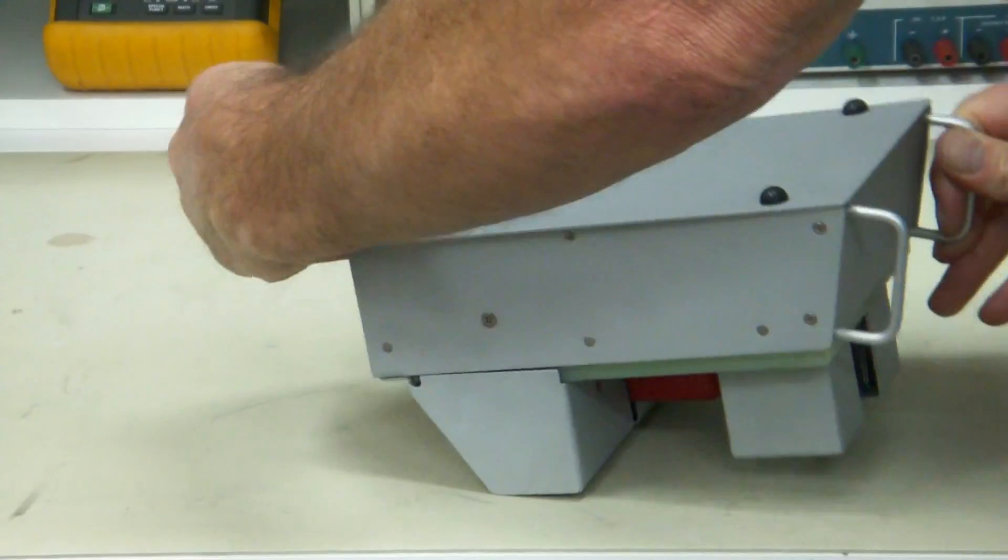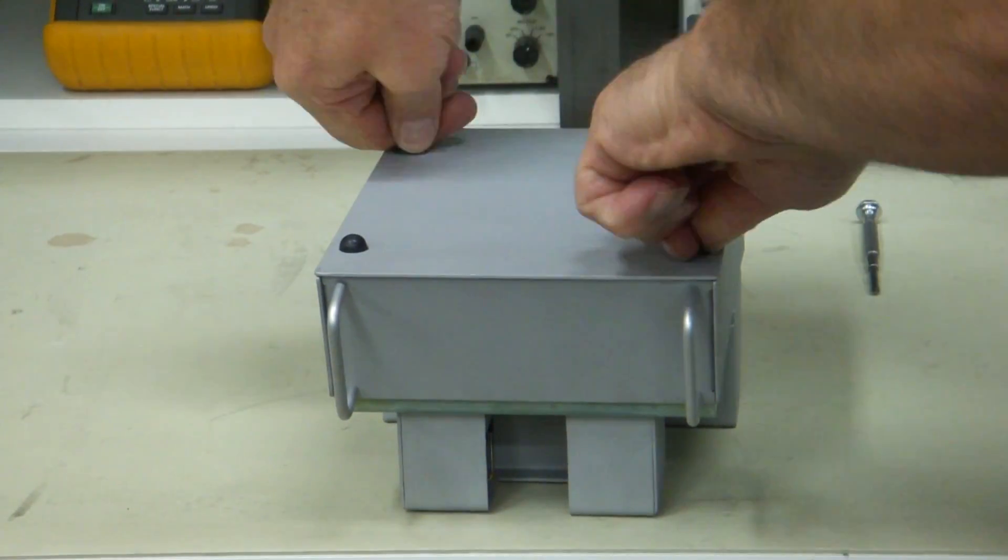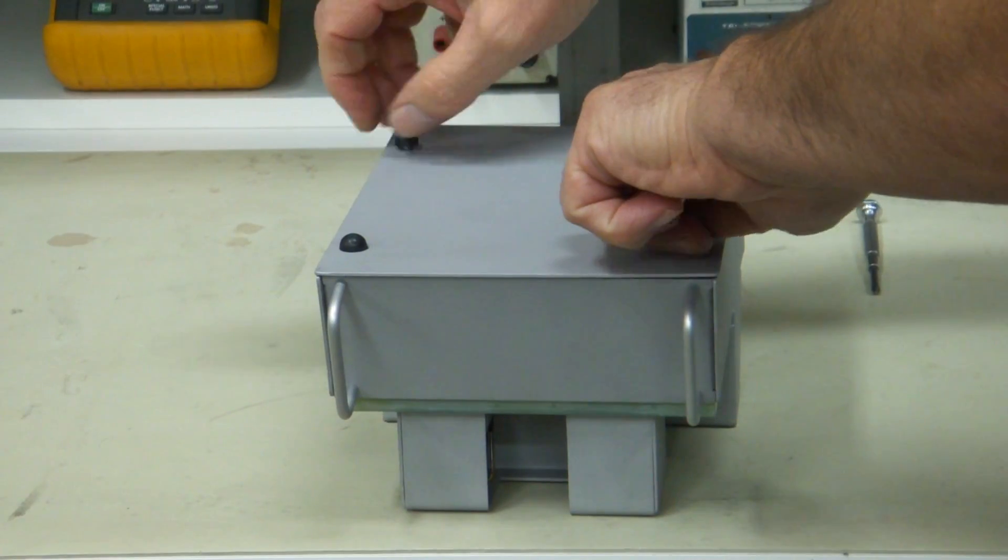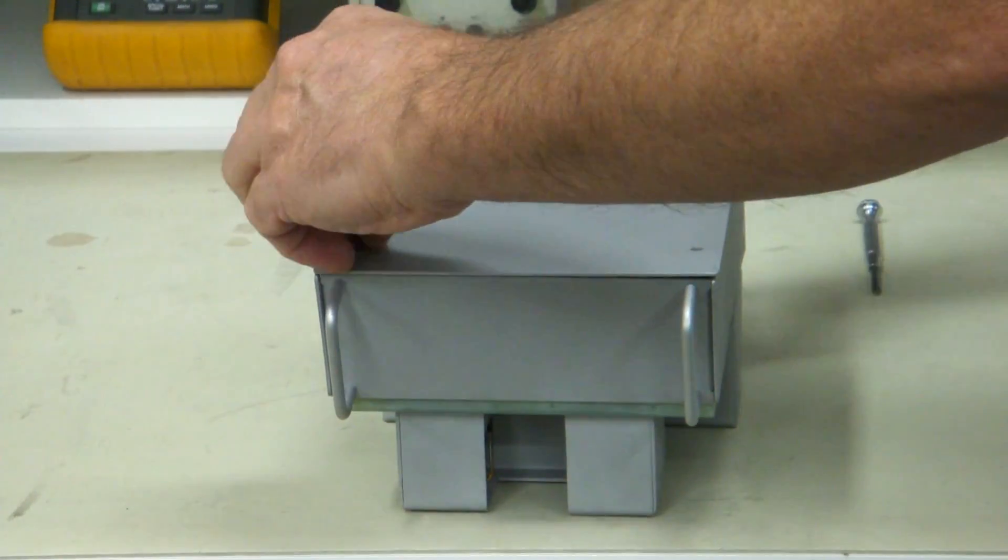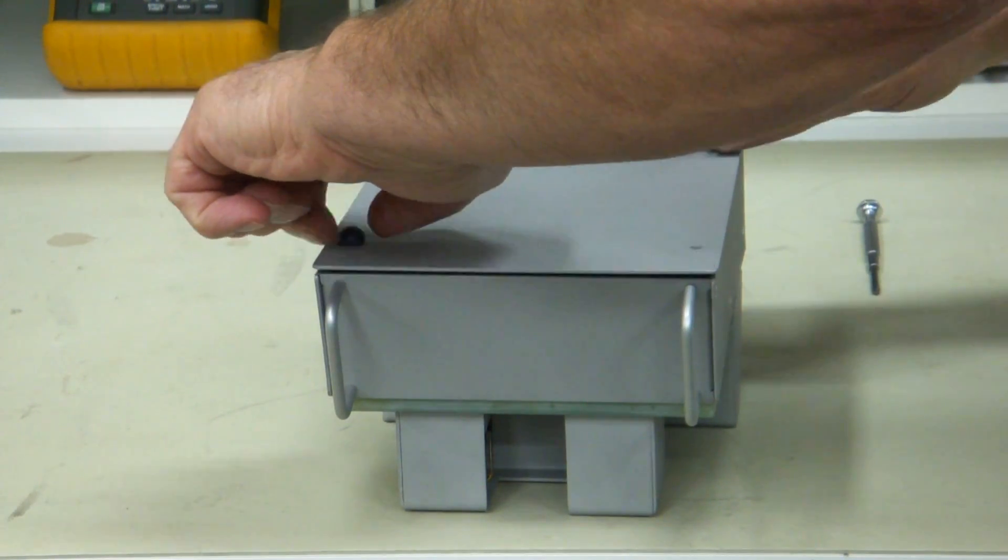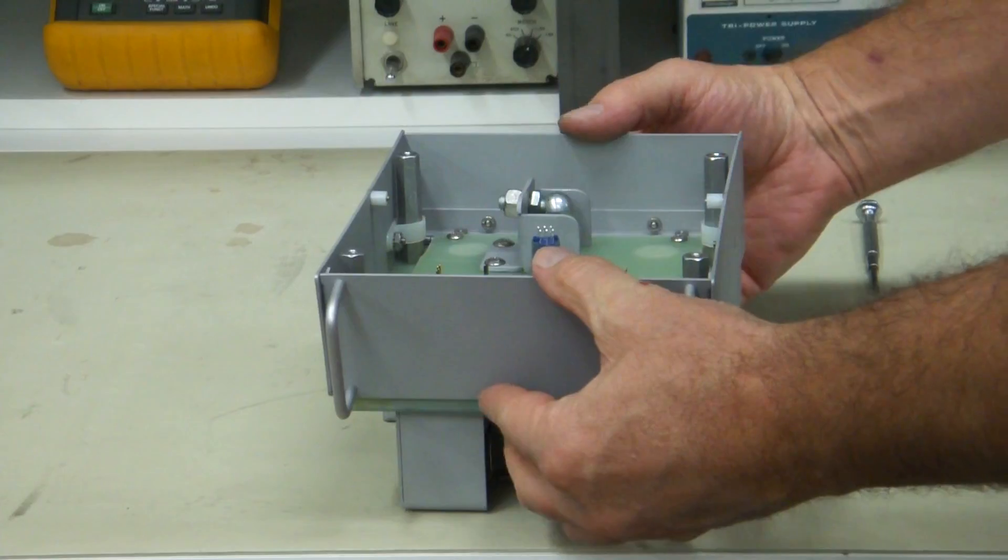Now another thing you can do is to access the inside you just remove this plate. You don't even need any tools for this. You've got these rubber bumpers and they just come right off like this. And you can access the hole inside.